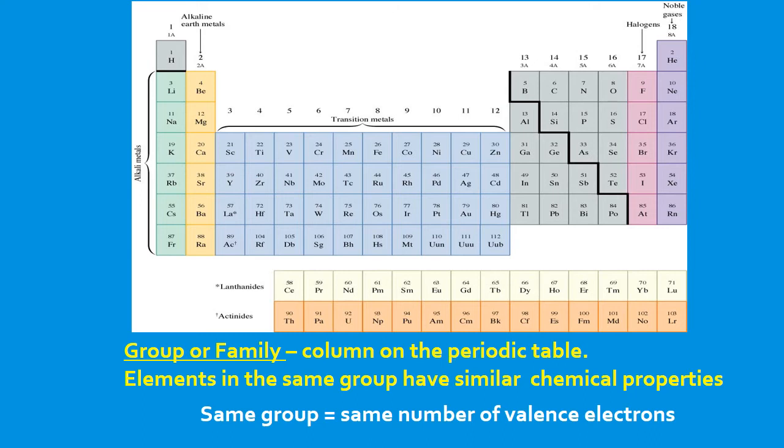The group numbers followed by the letter A are called the main group elements or the representative elements. So that means that we have group 1A, group 2A, group 3A, 4A, and these here are called the main group elements. The elements between group 2A and 3A, so these elements here, are called the transition metals. And these elements at the bottom here, they fit in right here on your periodic table, and they're called the inner transition metals.